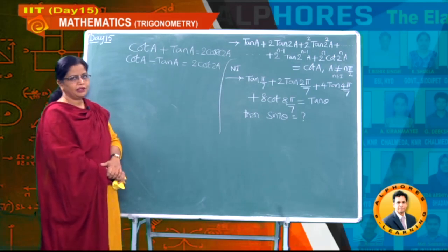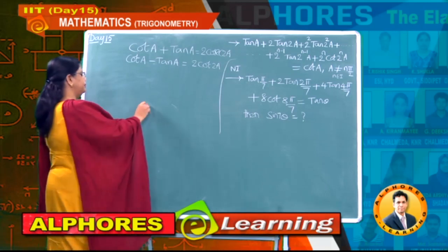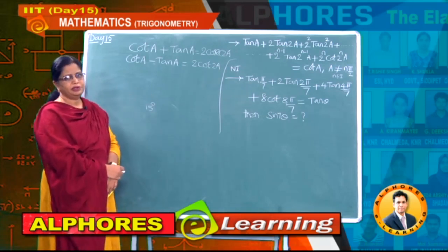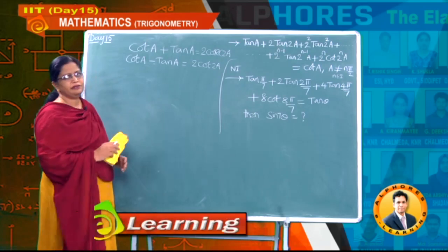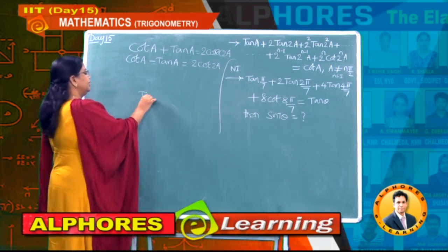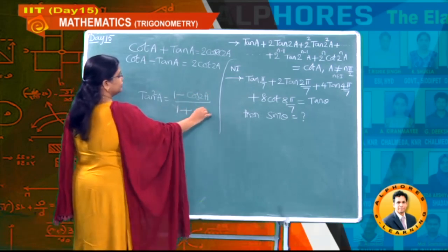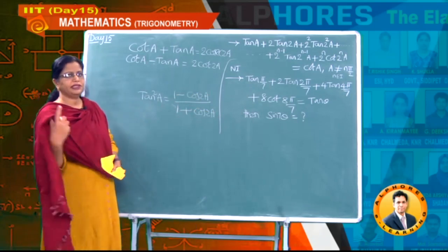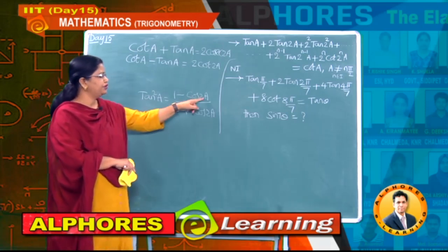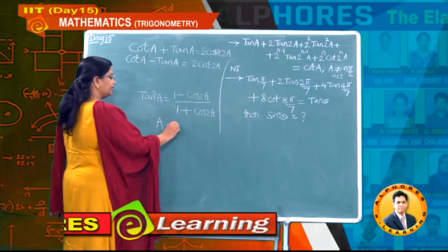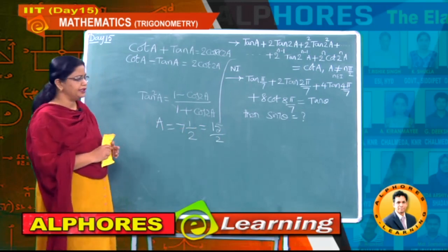Now, what kind of questions may be asked? Suppose we need tan 7½° and cot 7½°. Earlier we proved tan 15° and cot 15°. For 7½°, many formulae are available. For instance, tan²A = (1 − cos2A)/(1 + cos2A). If we put A = 7½° (which is 15/2 degrees), then 2A = 15°, giving tan²(7½°) = (1 − cos15°)/(1 + cos15°).